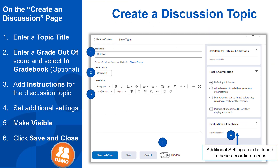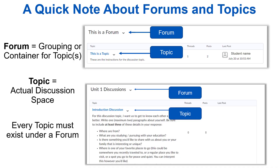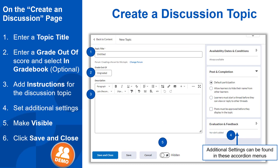This is the discussion topic creation page. Before we jump into creating our first discussion topic, I want to talk about two terms: Forums and Topics. Forums can be thought of as categories — they are essentially a container used to group topics together. A topic is the actual area students engage with to submit their threads or posts. You can have one forum for all your discussion topics, or you can create a unique forum for each topic, but every topic must have a forum. In essence, topics are what students actually respond to, while forums are just containers or categories for the topics.